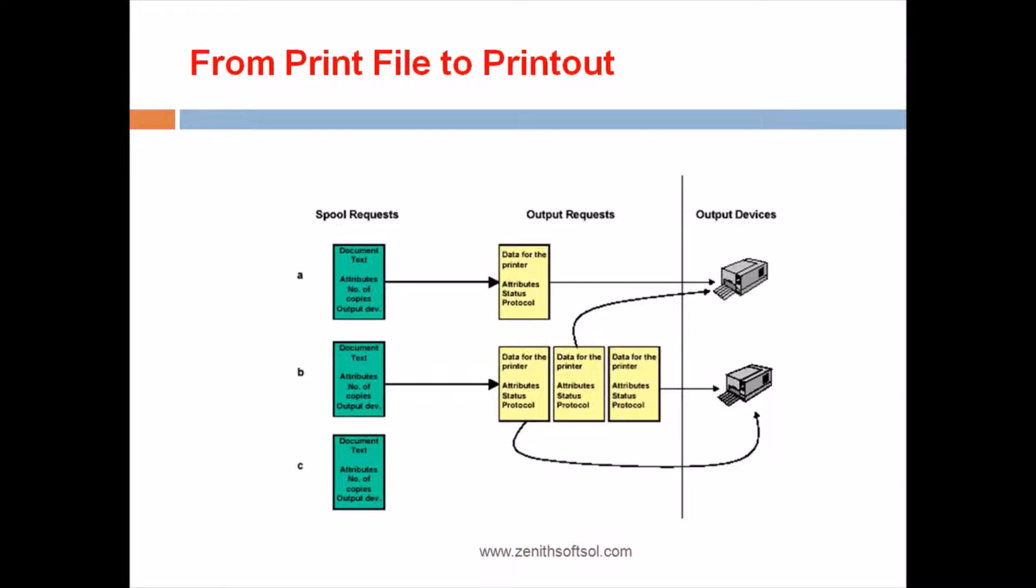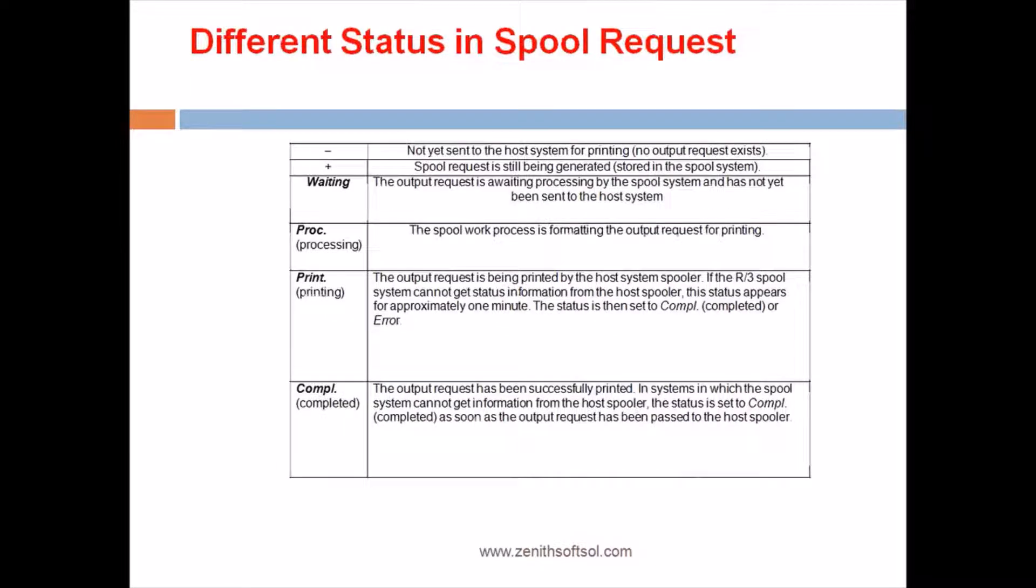This is a general layout of how the spool request is created. Now in this layout it's very important to know about the status in the spool request. The minus sign indicates it's nothing but not yet sent to the host system for printing, means when the user sends a request for printing, if it shows minus, it has not sent to the host system for printing.